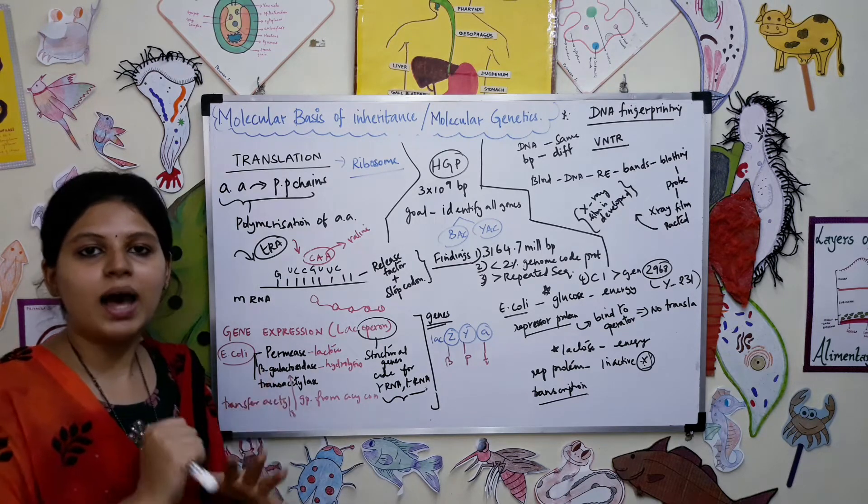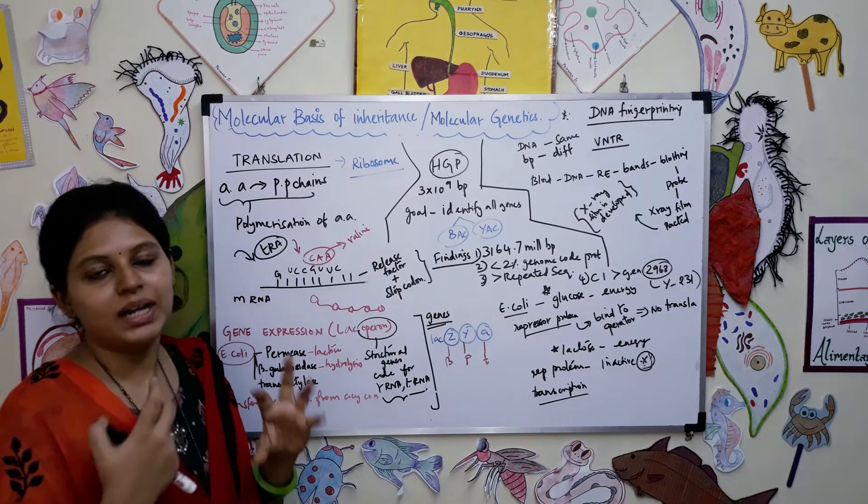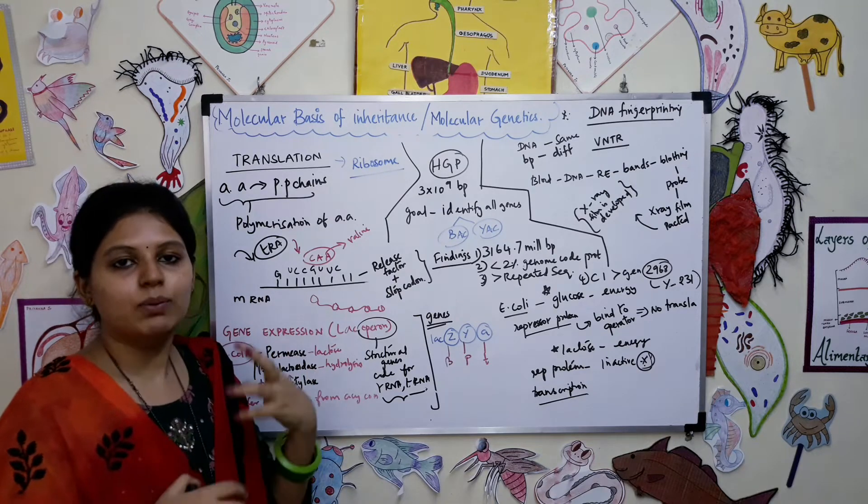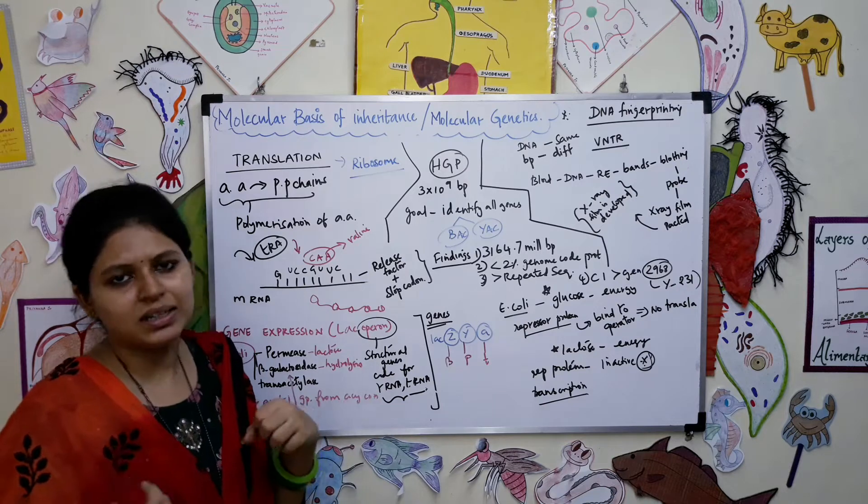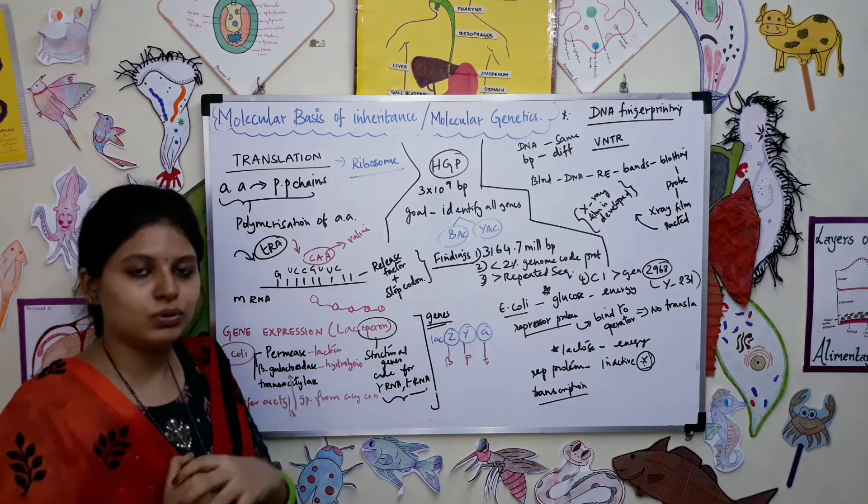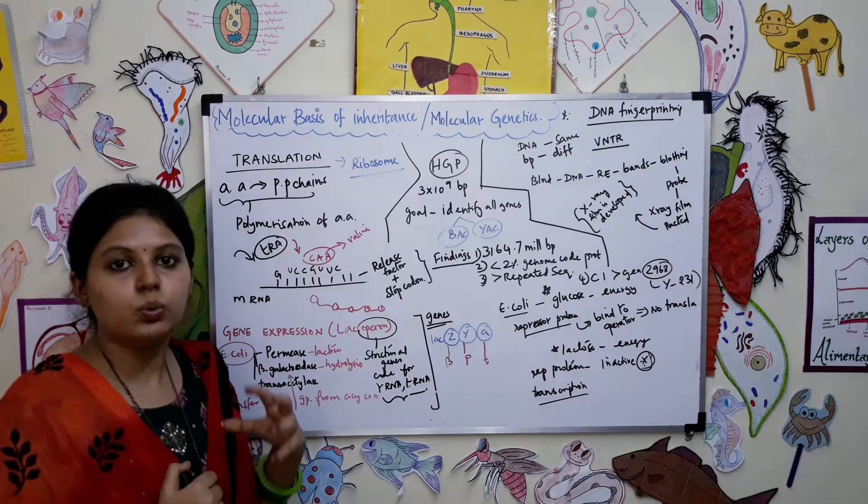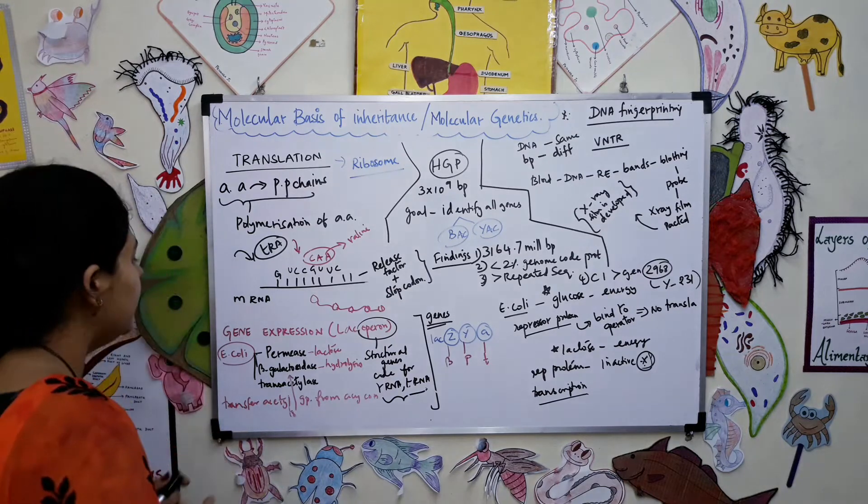Ribosome has subunits - a bigger subunit and a smaller subunit which you can call 70S, 30S, the different subunits in ribosome. S stands for Svedberg unit.